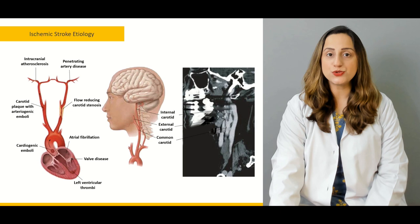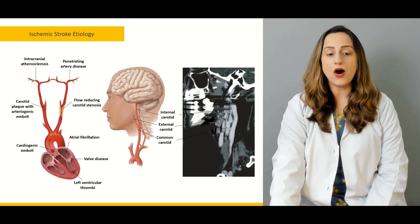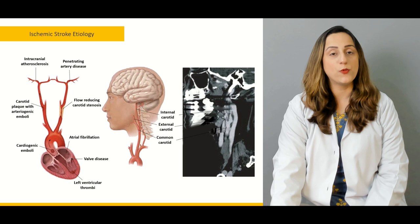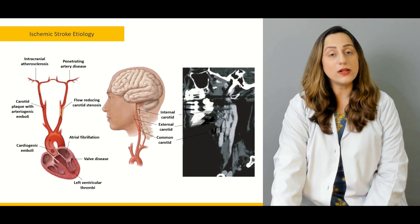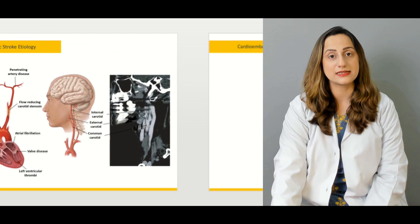We're going to go through the most common causes towards the development of stroke in the patient. We'll start off with the cardiogenic causes, which primarily include ventricular thrombi, valvular diseases, and atrial fibrillation. Carotid stenosis as well as carotid plaques can even travel all the way to the cerebral vasculature and cause cerebrovascular accidents in a particular patient.